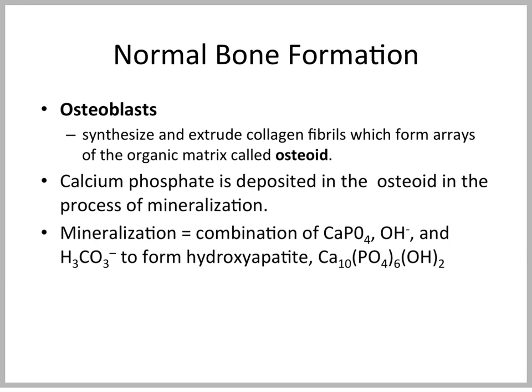It's a good time to talk about the cells involved in bone remodeling. Osteoblasts synthesize and extrude collagen fibers, which form the organic matrix called osteoid, on which bone is deposited. This deposition occurs in a calcium phosphate form as things mineralize, forming the complex structure of hydroxyapatite.